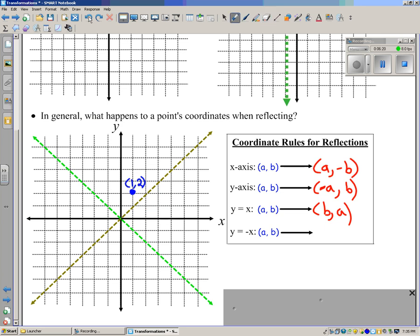And finally, across y equals negative x, 1, 2 becomes negative 2, negative 1. So AB becomes negative B, negative A. Now these are the rules. I'm not saying you have to memorize them. But there they are for you.